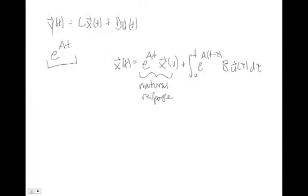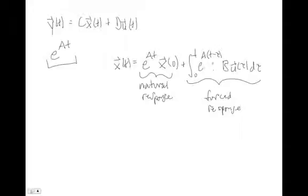We call the first term the natural response — the response with no input, where we just watch the system evolve from an initial condition based entirely on itself. We call the second term the forced response, which depends on what input u we apply. Sinusoidal inputs tend to give sinusoidal forced responses; step inputs give step-type responses. The complete response x(t) is the sum of both. The natural response tells us whether the system is stable, unstable, first-order damped, or second-order oscillatory.